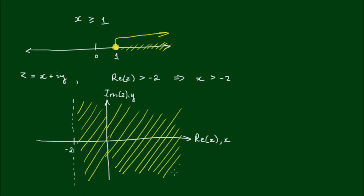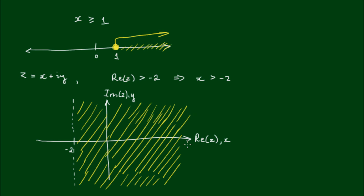There is no bound on the imaginary value or the y value, but x must be greater than negative 2. The shaded region is what I call the locus of the complex number z, for the condition that the real part has to be greater than negative 2.